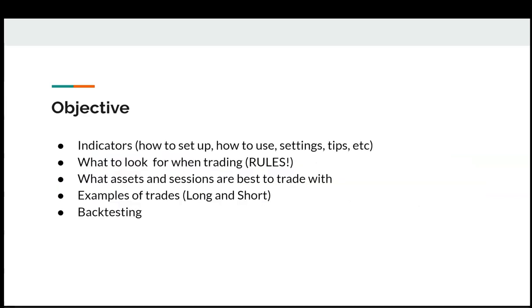So the objective is we're going to show you the indicators, how to set them up, how to use them, a couple of different settings and tips. What to look for when trading is basically the trading rules, assets, and sessions that are best to trade — especially if you have a different schedule. We're also going to do examples of trades for long and short positions and do a little bit of back testing, but I won't go too in depth with that. I want to keep this nice, short, and sweet.